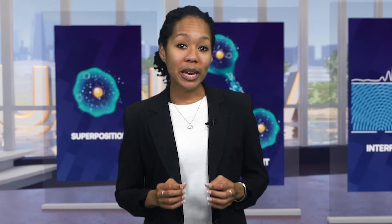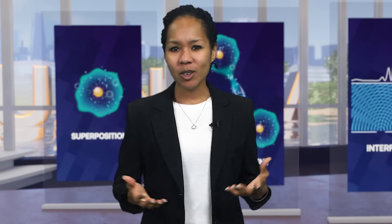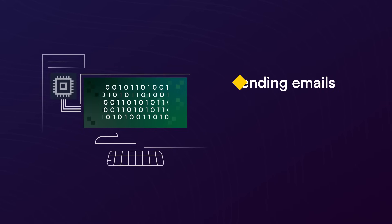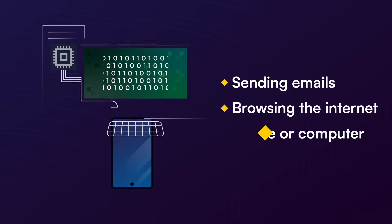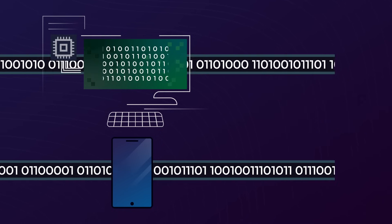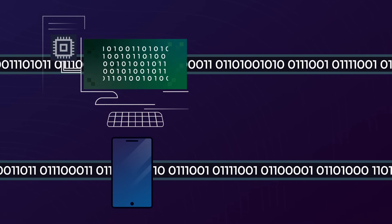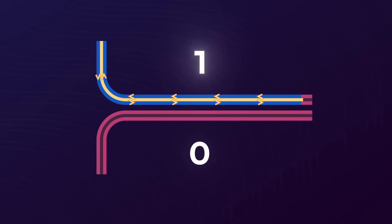The traditional way to encode information is to use bits — zeros and ones — which are just a convenient way of representing yes or no. We use bits every day when sending emails, browsing the internet, or using our phone or computer. In each case, complex algorithms are at work, which use bits as their basic building blocks. And those abstract bits have physical counterparts — for example, a wire with no current flowing through it is a zero, versus a wire where current is flowing, which is a one.